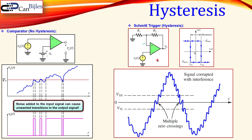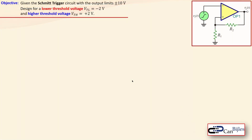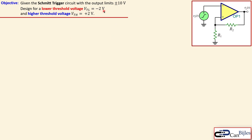If you have a non-inverting Schmitt Trigger, at threshold high the circuit will flip from the negative to the positive state; for the low threshold voltage it will switch from the high stage to the low stage of your output voltage. Now let's look at our actual example: we have the Schmitt Trigger circuit with output limits of plus and minus 10 volts, and we want to design a lower threshold voltage of minus 2 volts and a higher threshold voltage of plus 2 volts.